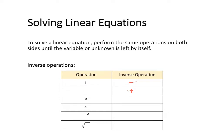The inverse of multiplying is dividing. The inverse of dividing is multiplying. The inverse of squaring a number is square rooting it, and the inverse of square rooting a number is squaring it.